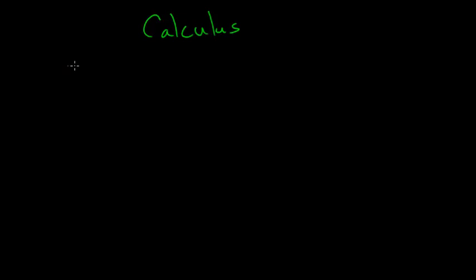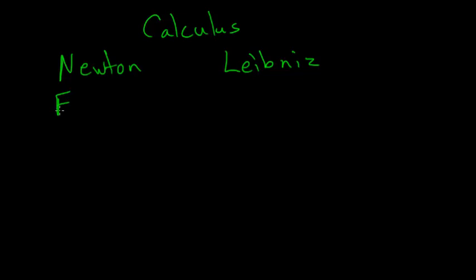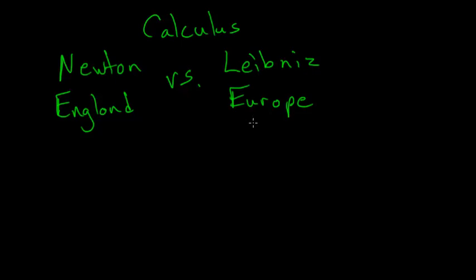Calculus was independently created in the late 1600s by both Isaac Newton and Gottfried Leibniz. Isaac Newton was from England, and Leibniz was from continental Europe — Germany specifically. They ended up having a big priority dispute over who found calculus first, and this dispute caused an enormous rift between England and continental Europe. They essentially split paths and didn't communicate with each other on scientific matters for well over a hundred years.